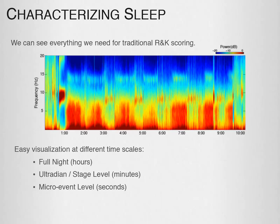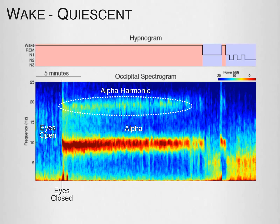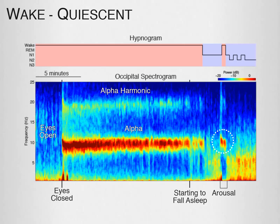Here is an example of wake EEG data. At the start, the subject is awake with their eyes open — except for some very low frequency activity, there isn't much. The second they close their eyes, we see the occipital alpha, a very strong oscillation between 8 and 12 Hz, that persists for a long time. You may also see the alpha harmonic, a low-powered ghost-like pattern of the alpha oscillation, which is an artifact created because alpha waves are not perfectly sinusoidal. At the noted point, the subject starts to fall asleep as the alpha fades, showing more power in the delta and theta range, followed by an arousal marked by the temporary reappearance of the alpha.